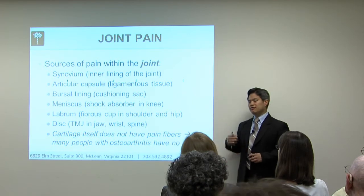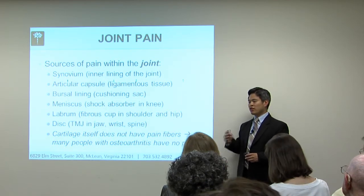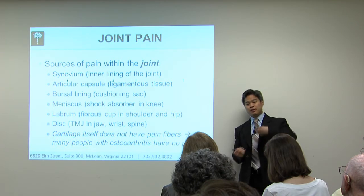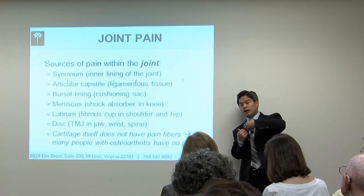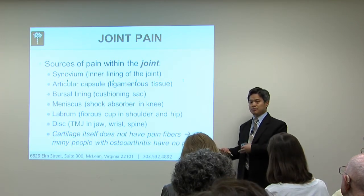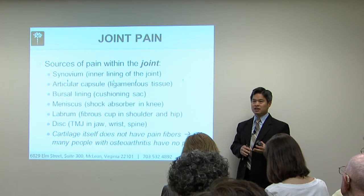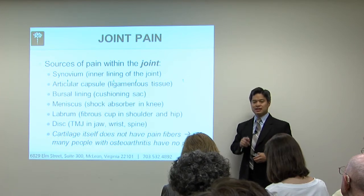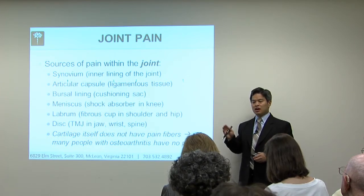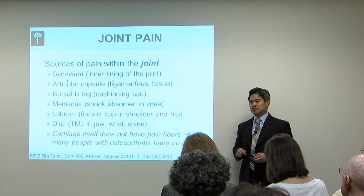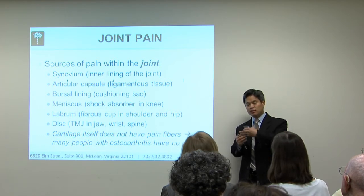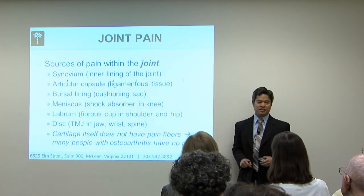What happens in advanced arthritis is that the cartilage wears away so badly that it affects the bone. You hear people talk about bone-on-bone arthritis, and that's what you can see on the x-ray, because the x-ray does not show cartilage — cartilage is actually invisible on an x-ray. When the arthritis is significant enough that it's affecting the bone, that's what you see on the x-ray.